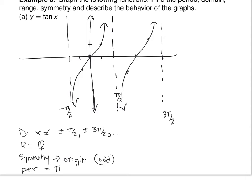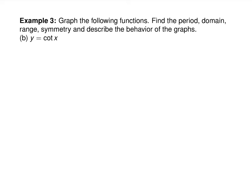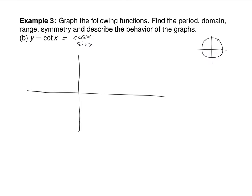Let's graph the cotangent function. Cotangent is cosine over sine. Where will this function have its asymptotes? Sine is zero at 0, and again at pi, so it'll have its first asymptote at the y-axis, next one at pi, then at 2pi. It's useful to plug in some numbers. At pi/2, the x divided by the y gives us 0. At pi/4, the x and y are equal, so cosine/sine gives 1. At 3pi/4, you get negative 1.